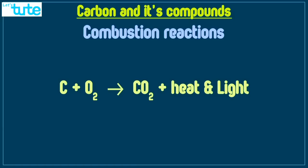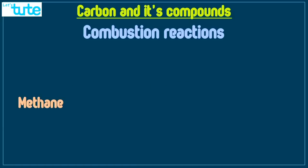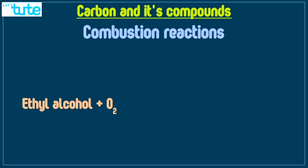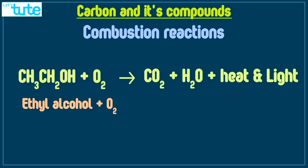Let us take a look at the second example. Methane when burnt in presence of oxygen gives us CO2 plus H2O plus heat and light. Now the third reaction is when ethyl alcohol burns in the presence of oxygen. We can write ethyl alcohol as CH3CH2OH or C2H5OH plus O2 which gives us carbon dioxide plus H2O that is water plus heat and light.